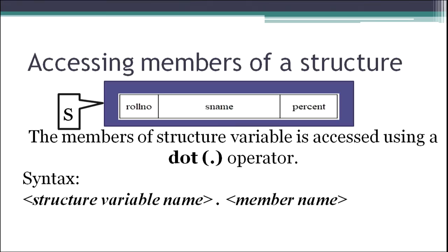Suppose we require data of around 20 students — we would not initialize for 20 students manually; we would want to accept data from the user. For that we have to access members of a structure. A member of a structure can be accessed using the dot operator. The syntax is: structure variable name, dot, then the member name. For example, if the structure variable name is s, we write s.s_name, s.percent, s.roll_number to access the respective members.